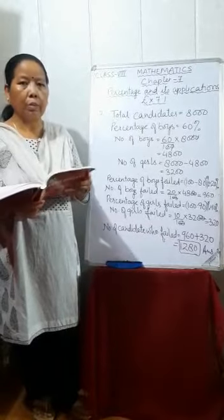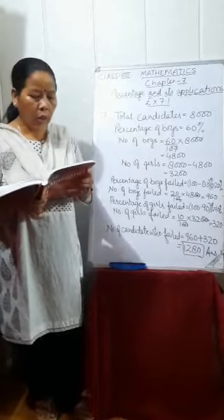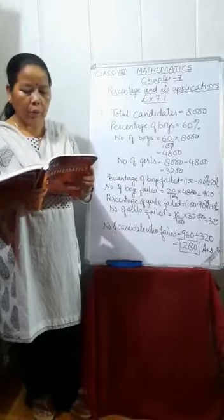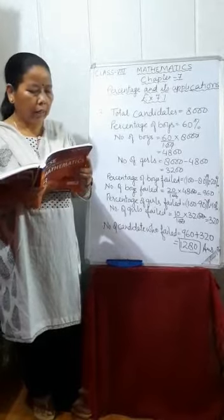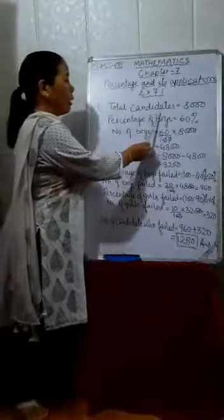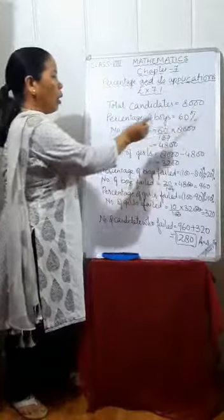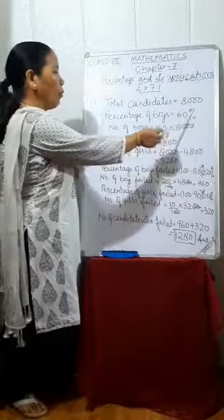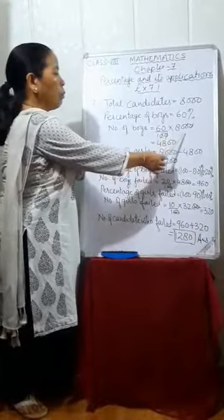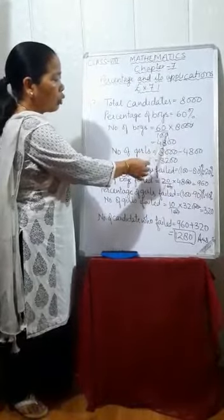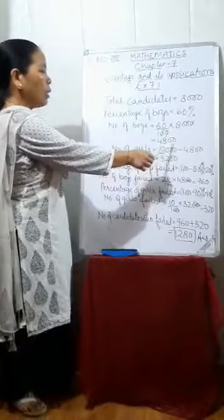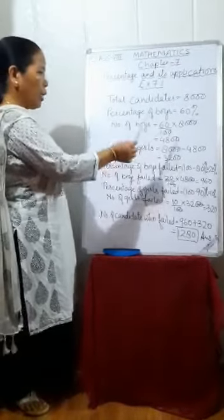Now I am explaining question number 17. Out of 8,000 candidates, 60% were boys. If 80% of the boys and 90% of the girls passed the exam, find the number of candidates who failed. Total candidates equals 8,000. Percentage of boys is 60%, so number of boys equals 60 upon 100 multiplied by 8,000, which gives 4,800.